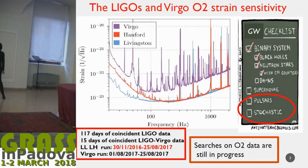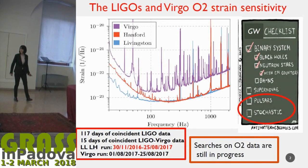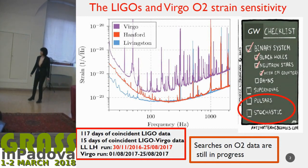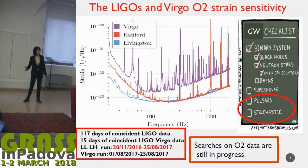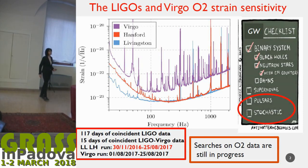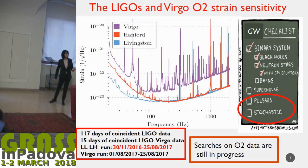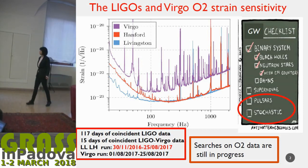The results which we have seen are not the end of the story because we are heavily analyzing. I have to say that we have received only a few days ago the very last version of recalibrated and cleaned data. So the search for in particular pulsars and stochastic, but also for supernova explosions, is something which is really ongoing now.